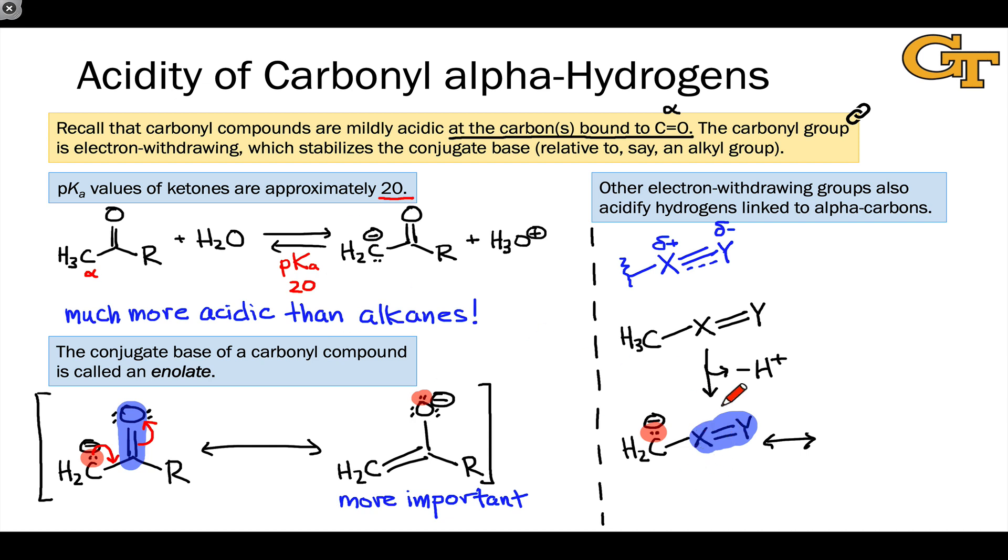This means that for any electron withdrawing group, whether it's a carbonyl group, cyano, nitro, anything, we can draw an alternative resonance form in which the negative charge, which was generated by deprotonation, is shared over the carbon and the Y atom.